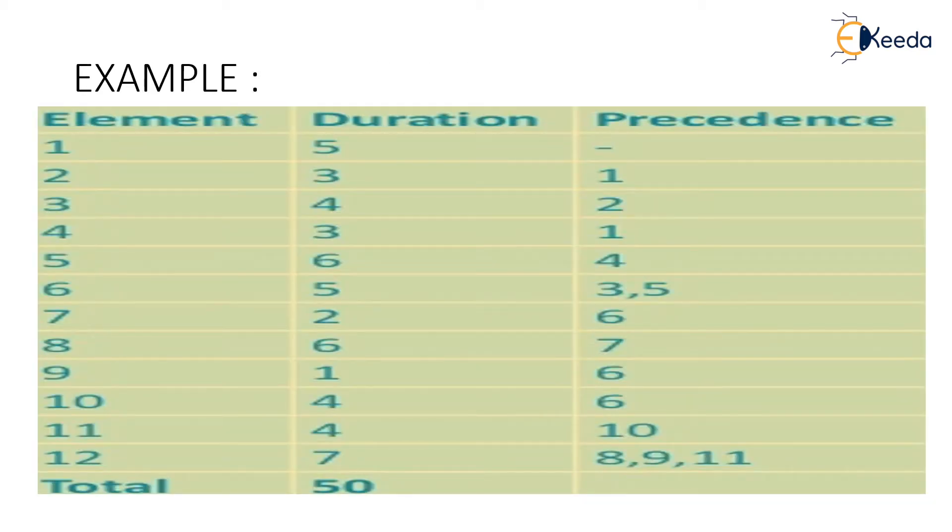For example, if we consider a number of elements from 1 to 12 with different time durations of 5, 3, 4, 3, 6, 5, 2, 6, 1, 4, 7 which is total of 50 minutes, and we use the precedence diagram. Like for 2 it is 1.